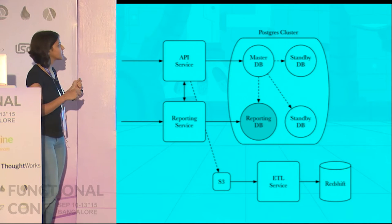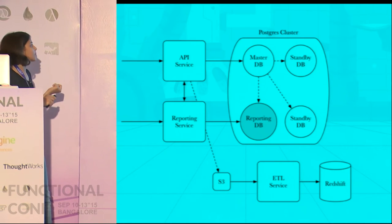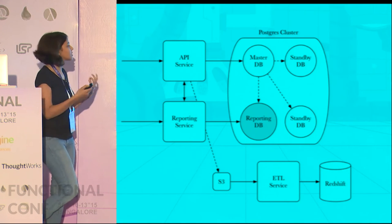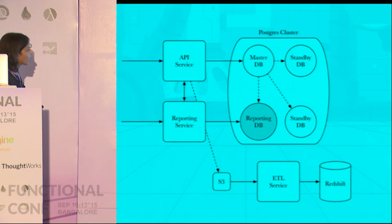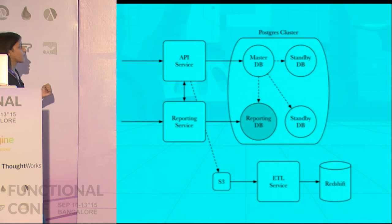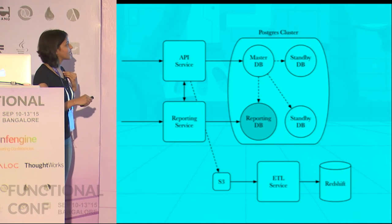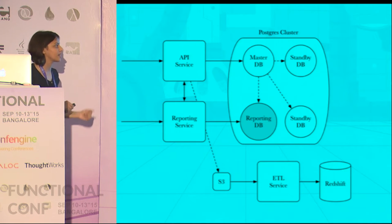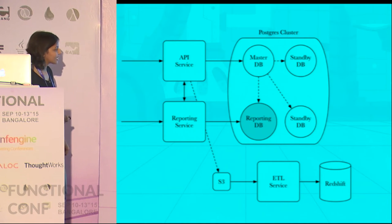As a brief explanation: the API service serves all the client's runtime needs — starting a session, asking for treatments, giving treatments, confirming a treatment, and recording purchase events. The reporting service is where clients set up and schedule experiments and report on them. The Postgres cluster is essentially the state store for all our functionally written code — we maintain a Postgres cluster with one master and three standbys, one of which acts as a reporting DB. Then we have an ETL service written in Clojure which talks to Redshift.